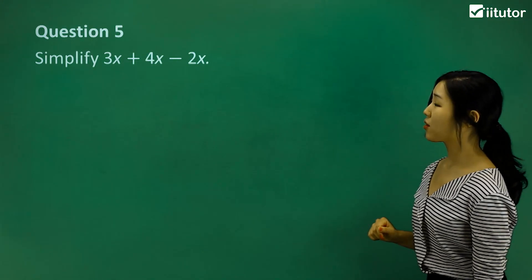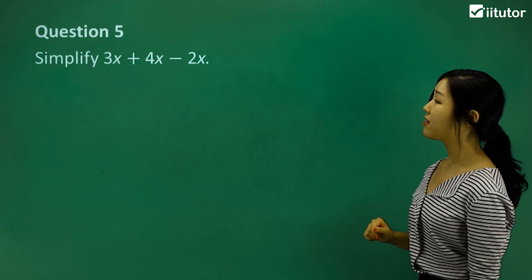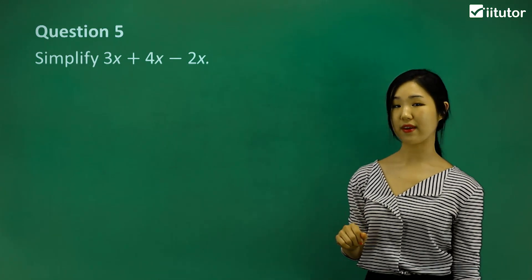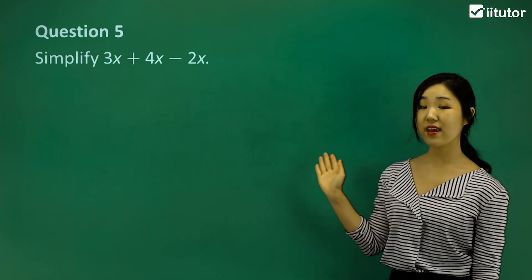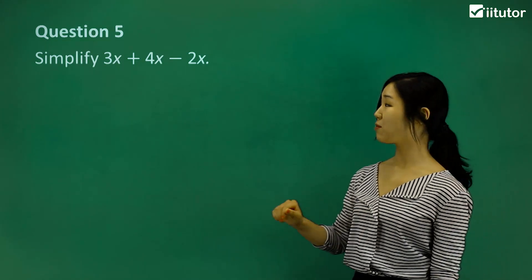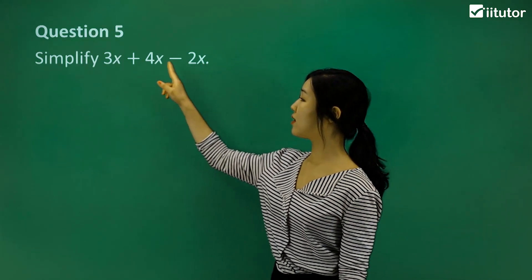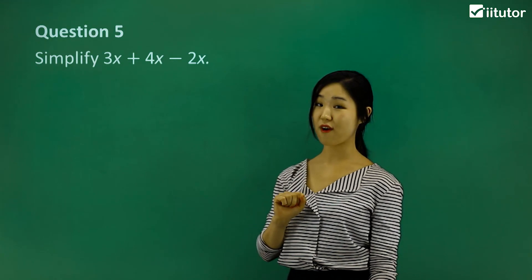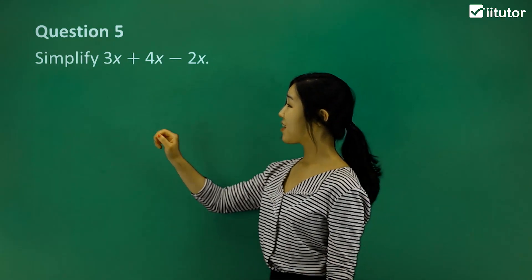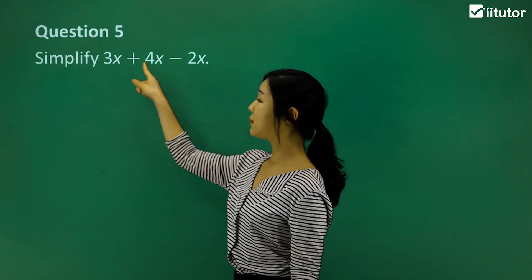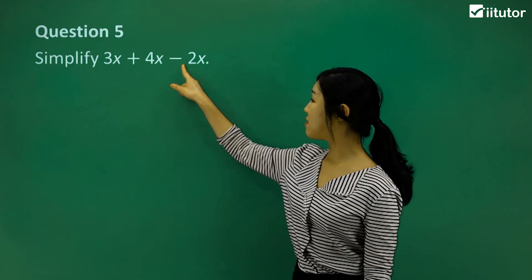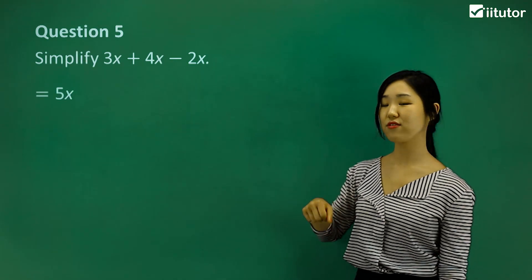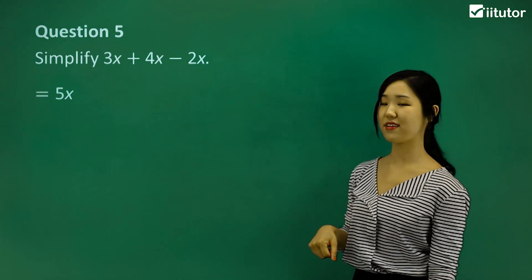Question five: simplify 3x plus 4x minus 2x. They are all like terms because they all end in the same variable x. Let's just focus on the coefficients: 3 plus 4 makes 7, and then minus 2 makes 5. So this simplifies to 5x.